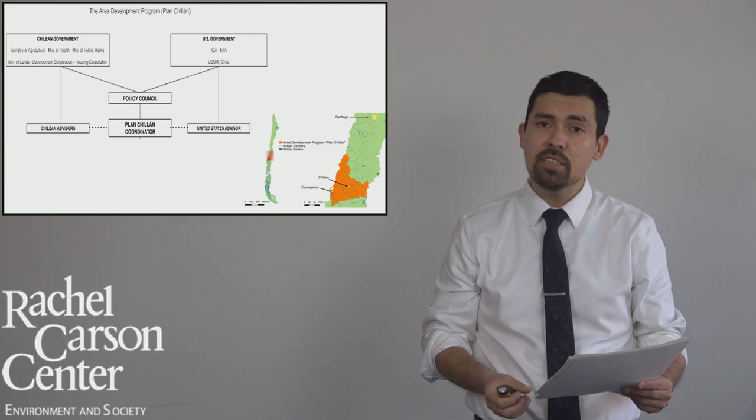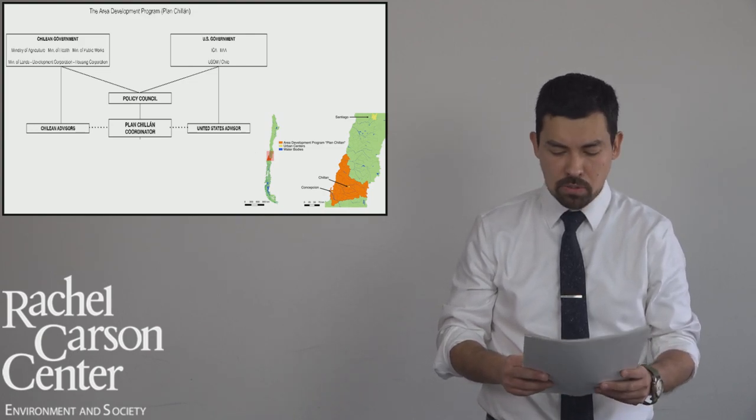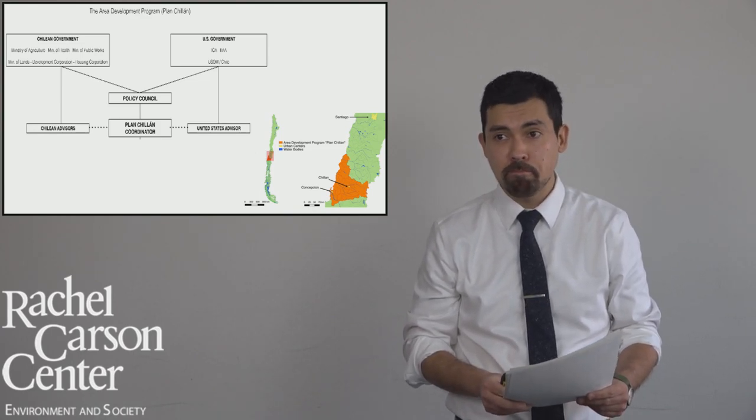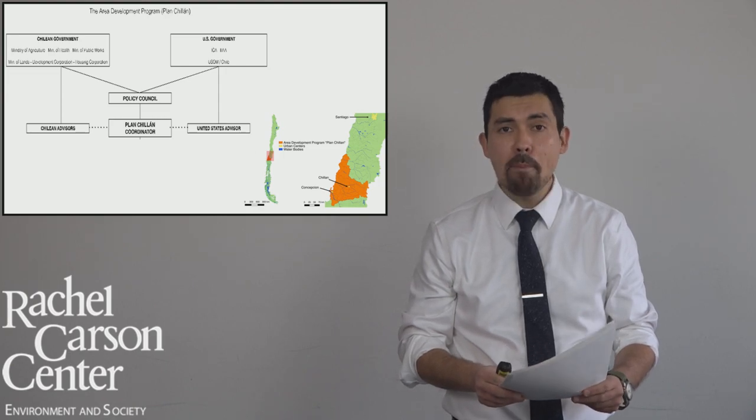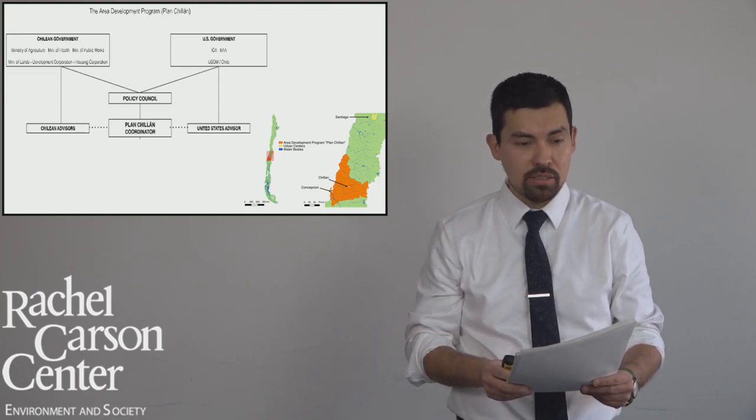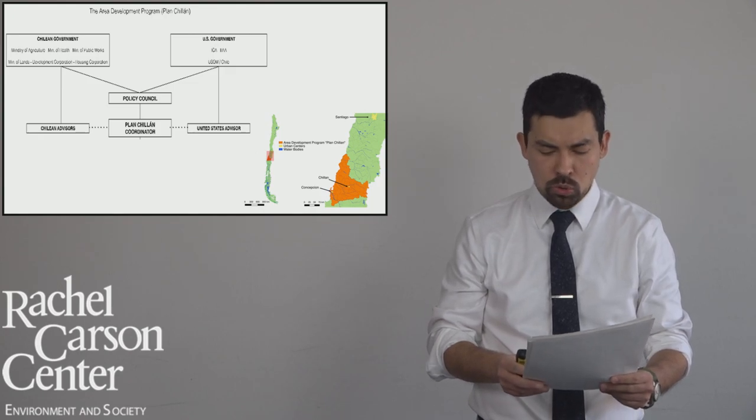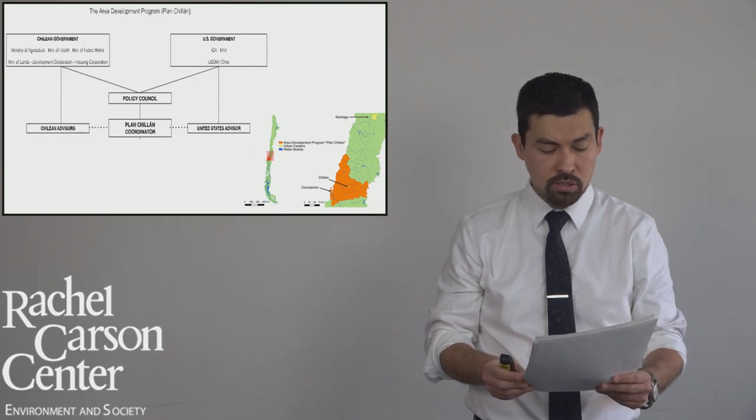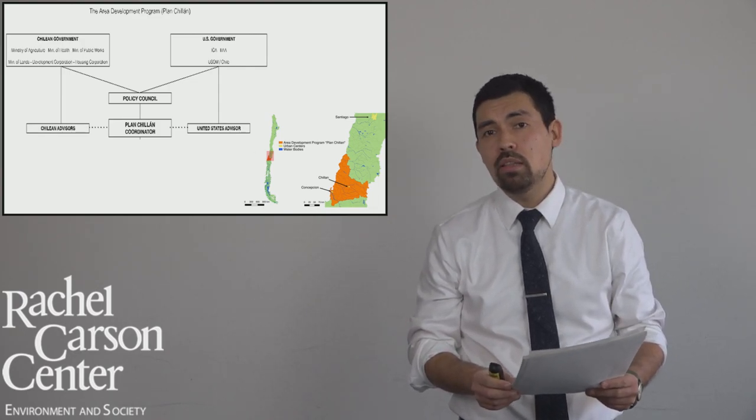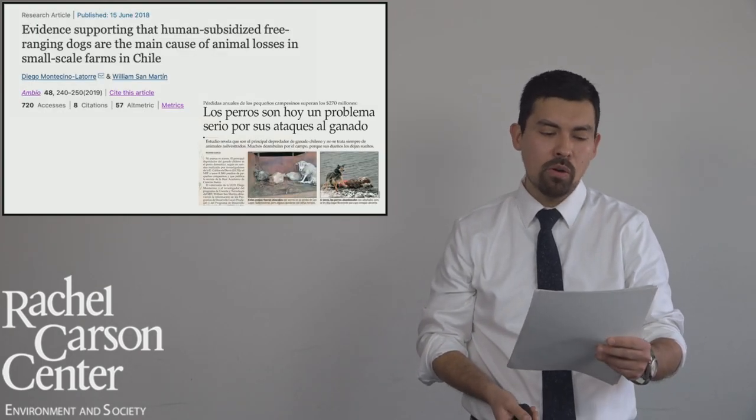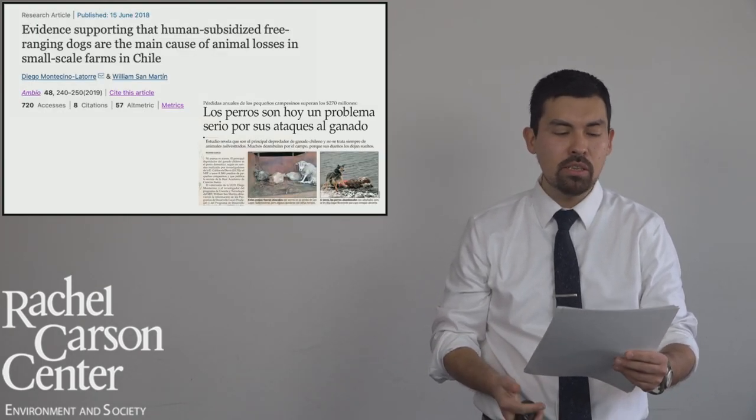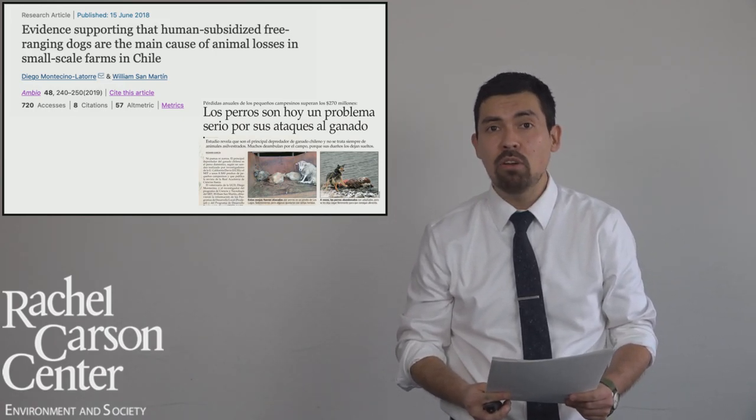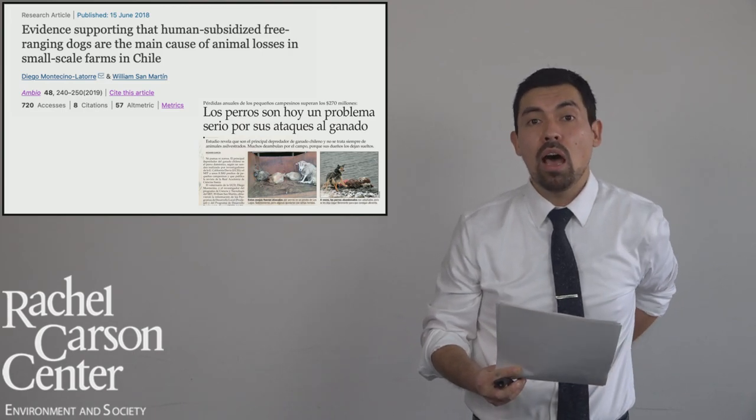Later on, I studied scientific exchange programs and science diplomacy endeavors for agricultural development projects in Latin America during the Cold War. In particular, I looked at how American and Chilean scientists and government agencies built an institutional framework for the quick incorporation of new agricultural knowledge and technologies that eventually enabled what we call today the Green Revolution. I also had the honor to work with government officials in the agricultural development institute in Chile addressing the impacts of free-ranging dogs on biodiversity and the livelihoods of small-scale farmers and indigenous communities.